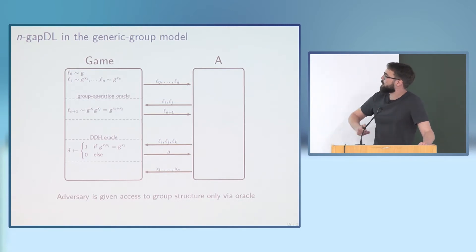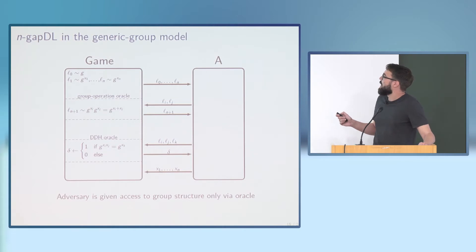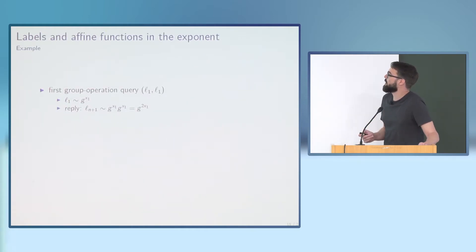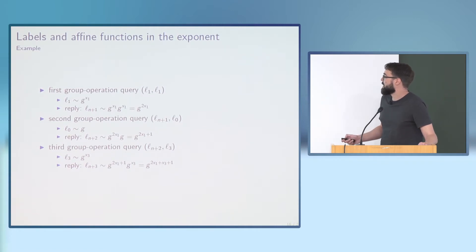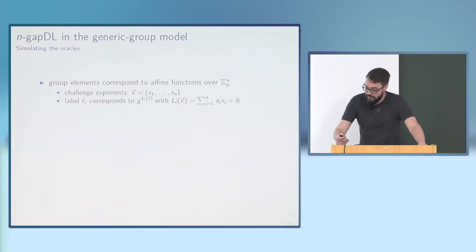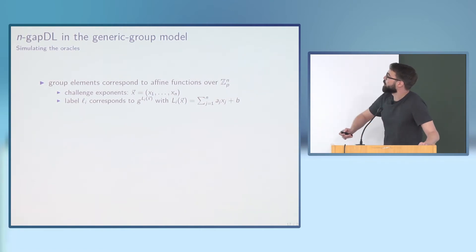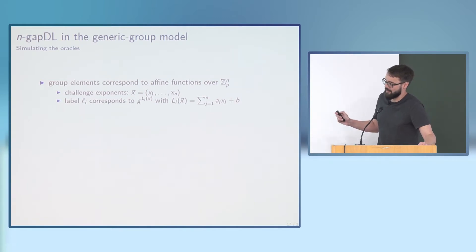To connect this to a geometric search problem we use a standard trick: all group elements the adversary knows correspond to affine functions in the challenge exponents. For example, if the adversary queries twice the same label l_1, it gets g^(x_1) · g^(x_1) = g^(2x_1). A subsequent query multiplying by the generator gives exponent 2x_1 + 1; adding another element x_3 gives 2x_1 + x_3 + 1. Since the adversary does not obliviously sample labels, every group element it knows corresponds to some affine function in the challenge exponents.